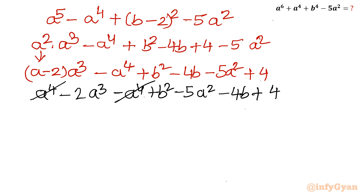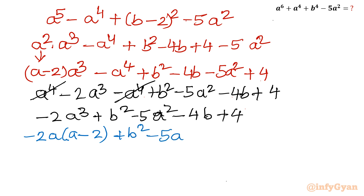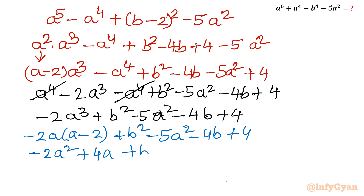The two a⁴ terms cancel. What remains is: minus 2a³ plus b² minus 5a² minus 4b plus 4. Splitting a³ as a² times a and substituting a² equals a minus 2: minus 2a times (a minus 2) plus b² minus 5a² minus 4b plus 4. Expanding: minus 2a² plus 4a plus b² minus 5a² minus 4b plus 4.